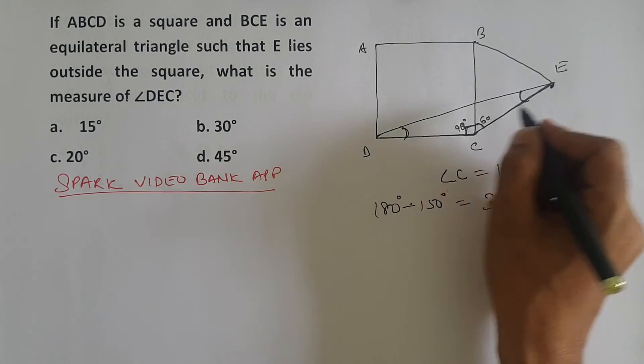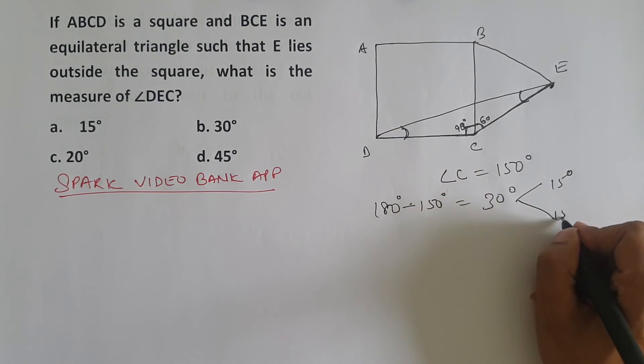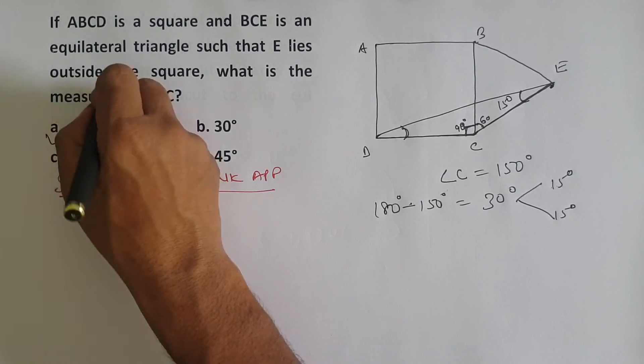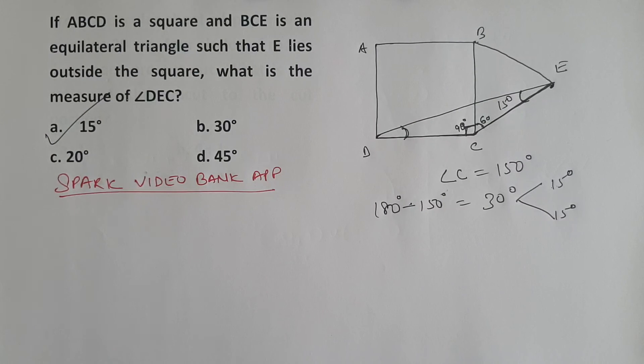These 30 degrees will be divided into two equal parts. Toh 15 degrees and 15 degrees matlab. This angle is 15 degrees. So the measure of angle DEC is going to be 15 degrees.